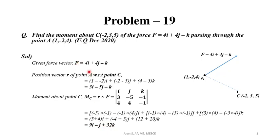So the moment about point C of the force F is given by 9i - j + 32k.